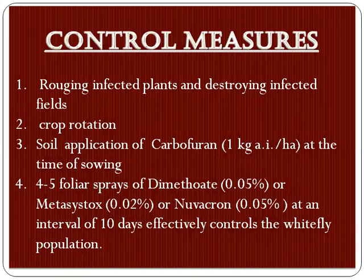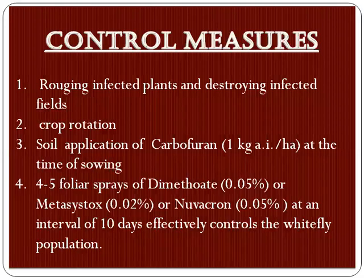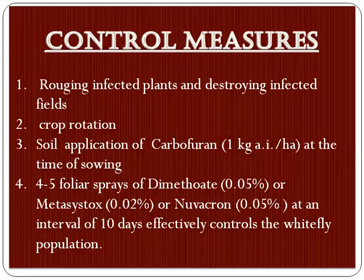For control of this disease: roguing infected plants, destroying and removing diseased plants from the field or after harvesting. Crop rotation is one of the known and traditional methods. Soil application of Carbofuran at 1 kg per hectare at the time of sowing is recommended. Foliar sprays of Dimethoate at 0.05%, or Metasystox at 0.02%, or Nuvacron at 0.05% at an interval of 10 days are also effective.